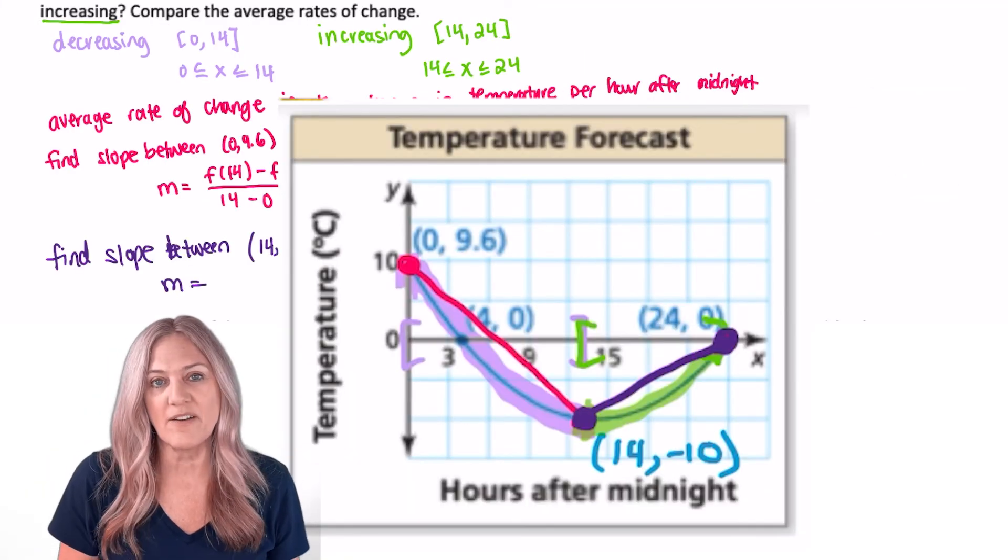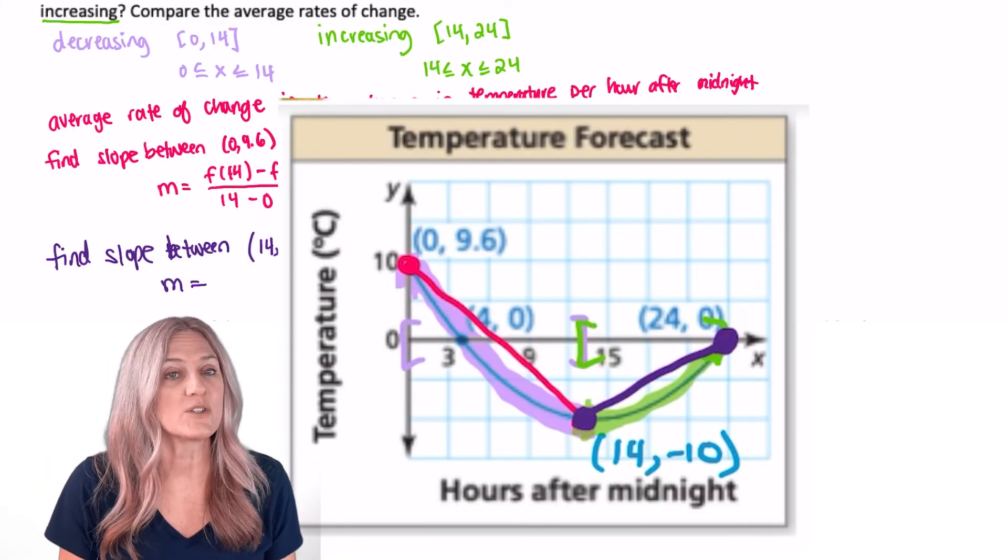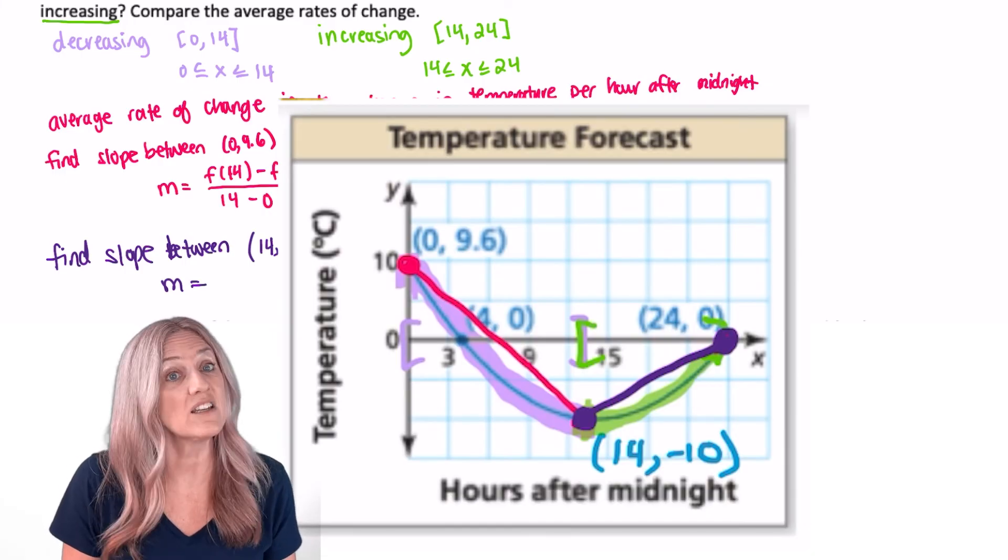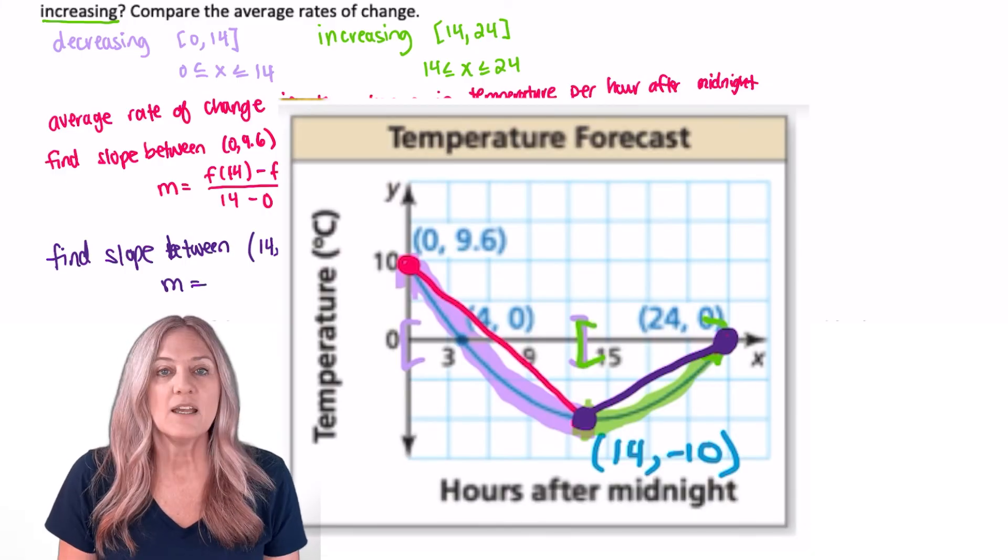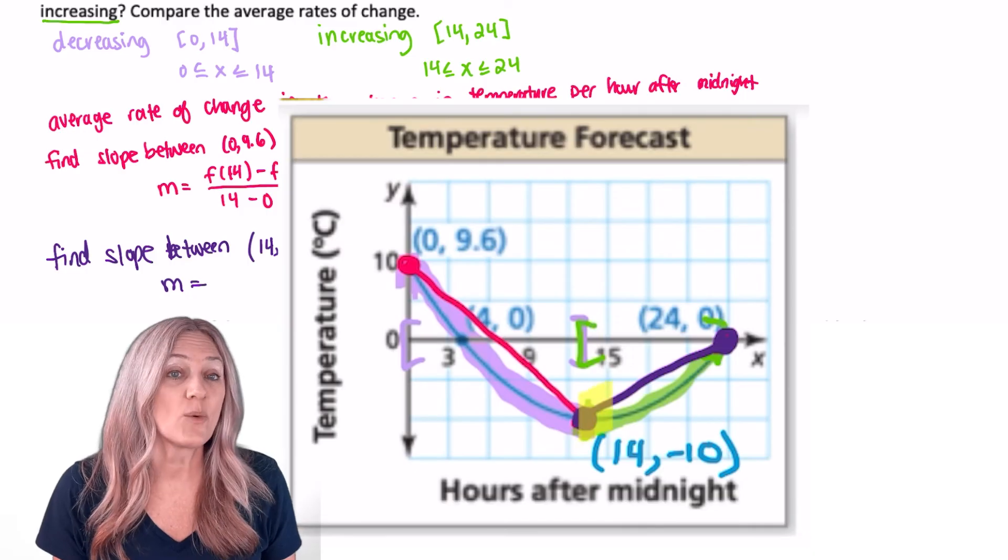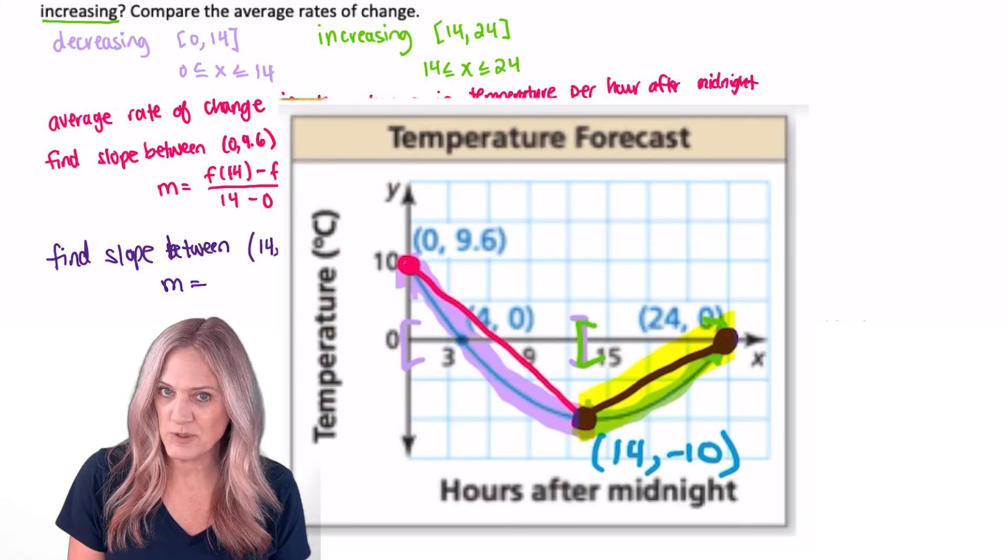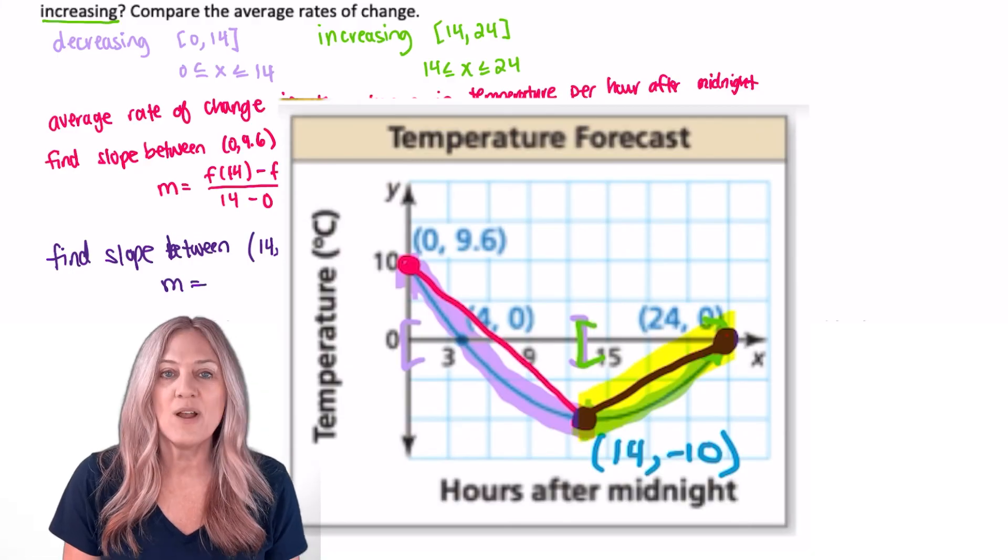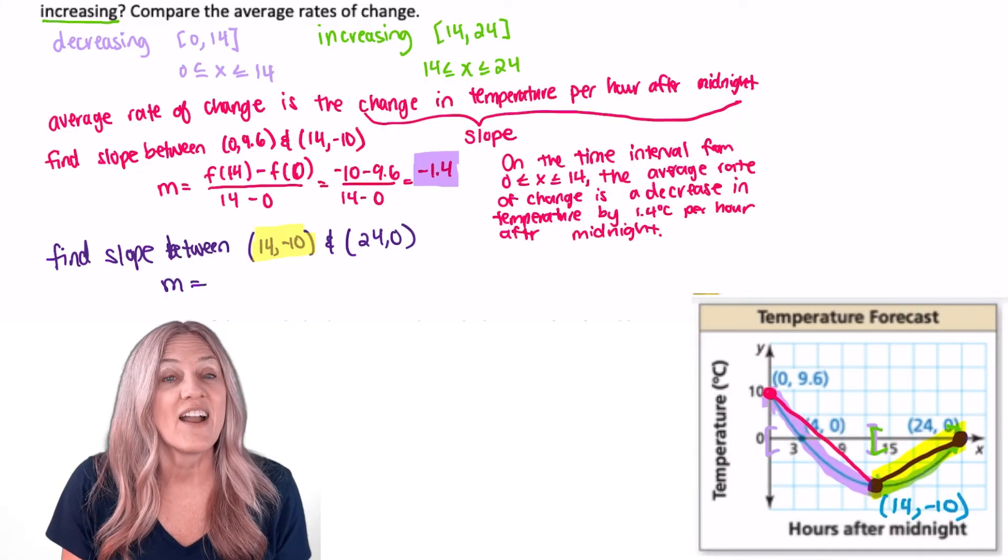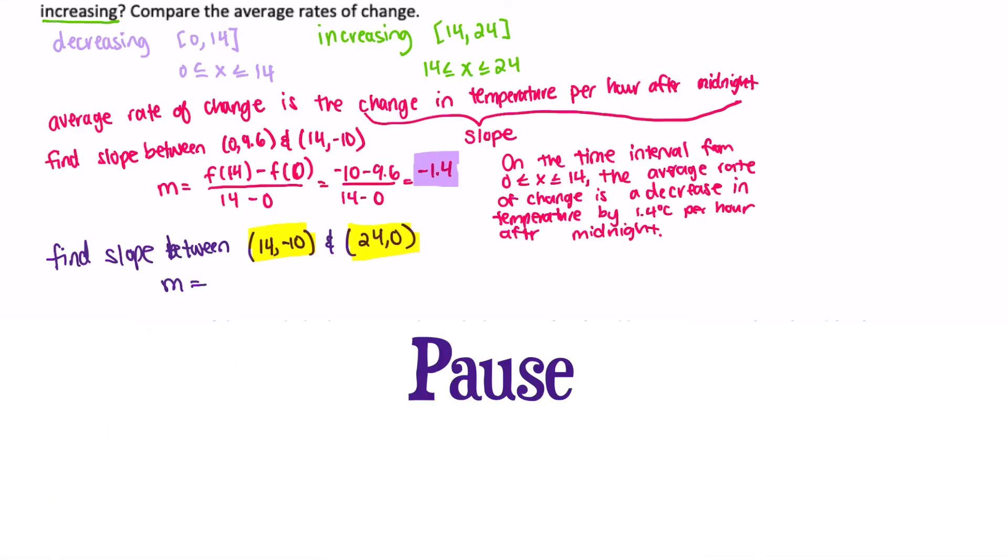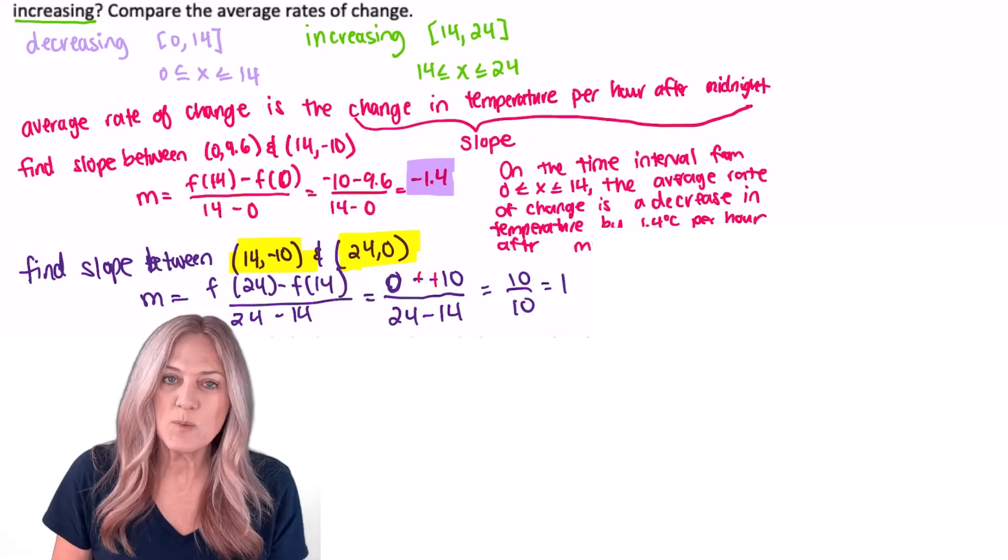Now let's find the average rate of change for where the temperatures are increasing. Remember, we already identified that that happens in the interval from 14 to 24. If we connect the two points on the graph where x equals 14, y equals negative 10, and x equals 24, y equals 0, use function notation to find the slope of the segment. The average rate of change is 1.